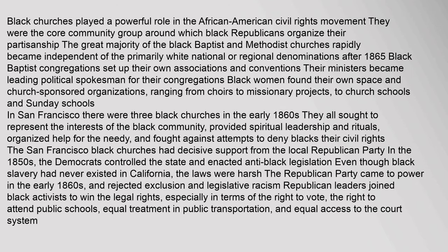Black churches played a powerful role in the African-American civil rights movement. They were the core community group around which black Republicans organized their partisanship. The great majority of the black Baptist and Methodist churches rapidly became independent of the primarily white national or regional denominations. After 1865, black Baptist congregations set up their own associations and conventions, and their ministers became leading political spokesmen. In San Francisco there were three black churches in the early 1860s, all seeking to represent the interests of the black community.